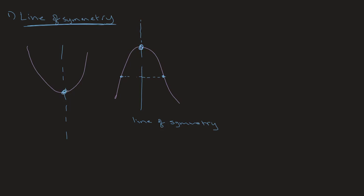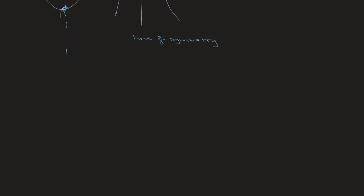Let's look at an example where we have to solve for either the maximum or minimum point. We have x squared plus 4x minus 5, and we have to find either the maximum or minimum point. Straight off the bat we can tell it's going to have a minimum point because the coefficient of x squared is 1, which is greater than 0. So we know that we're solving for a minimum point.